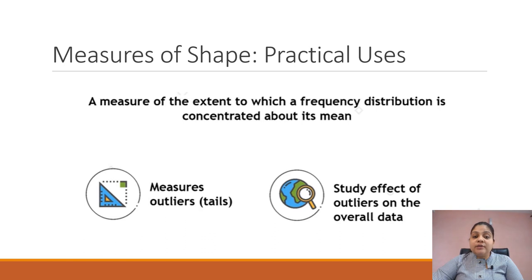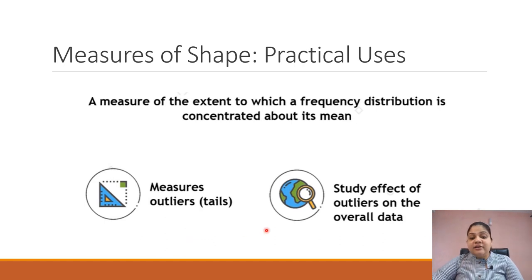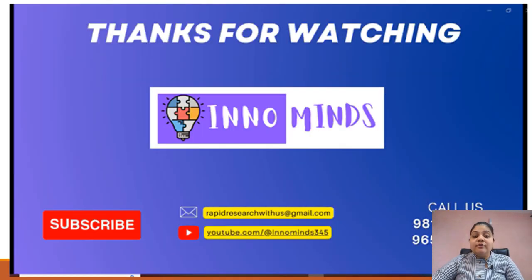The practical uses of measure of shape: it basically tells us the frequency distribution concentrated about the mean. It can be used to find outliers, because outliers can be easily identified using leptokurtic data, and we can study the effect of outliers on the overall data. This completes our descriptive statistics. Next we'll have a video on plots of these distributions and then a practical implementation in Python. Please subscribe to my channel, and for training in any visualization tool, Python, or data science, do contact me. Thank you.